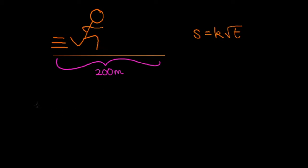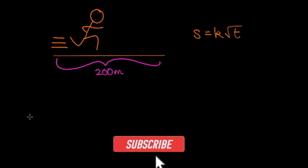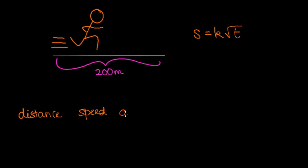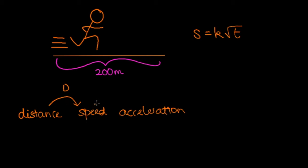Here's a really useful diagram that might help you with calculus of variable acceleration problems. We have distance, speed, and acceleration. Going from left to right we have to differentiate. So if we've been given distance as a function of time, differentiating gives us the formula for speed. And if we differentiate the speed again, we get the acceleration.